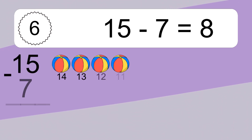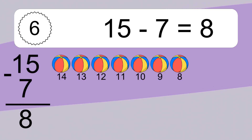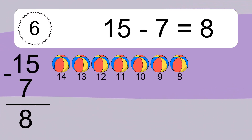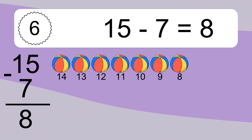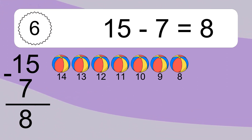15 minus 7 equals what? 15 minus 7 equals 8. Let's count it. 14, 13, 12, 11, 10, 9, 8.